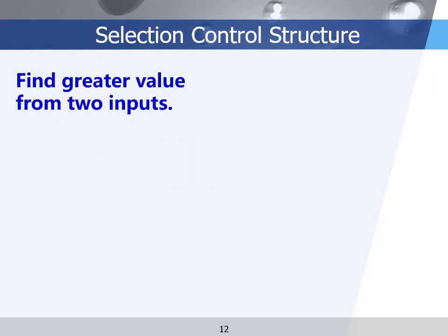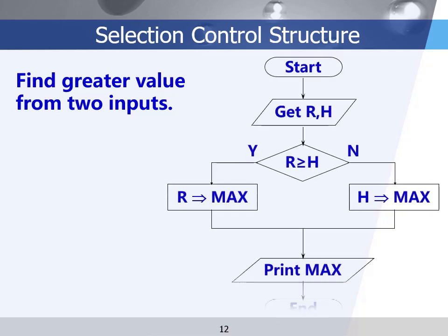This example shows how to use the selection structure. You have two input numbers and want to print out the greater value. We start from the start point, then the first step is to get the two values as input. Next is the condition structure: we compare the two values — if r is greater than or equal to h, then r will be the greater value; otherwise h will be the greater value. Then we print out the greater value, which is max.